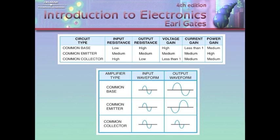An engineer with a high input impedance would use a common collector configuration for impedance matching. Output resistance or impedance for common emitter is medium; common base is high and common collector is low. Voltage gain: medium for common emitter, high for common base, and less than one for common collector.